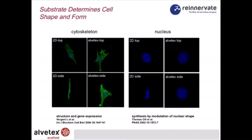These observations are not new. It has been reported that changes to cell shape are very significant in terms of gene expression and protein translation. There are numerous papers published by various scientific groups around the world reporting these observations. Changing the cell shape is really very critical, and the idea behind Alvitex technology is that shape change is minimized and cells grow more naturally in a three-dimensional context.